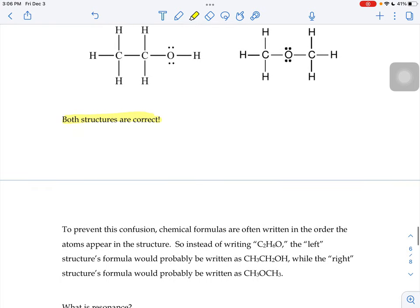So to prevent confusion, chemical formulas are often written in the order the atoms appear in the structure. So instead of writing C2H6O, the structure on the left would probably be written as CH3CH2OH. Because it gives us a little clue. Take a carbon and put three hydrogens around it, then a carbon with two hydrogens around it.